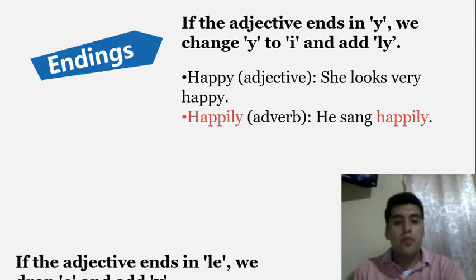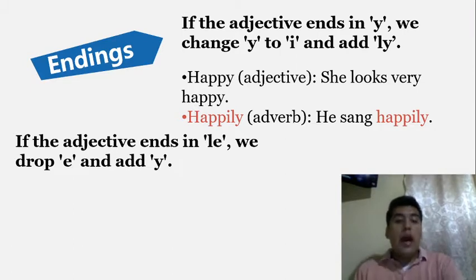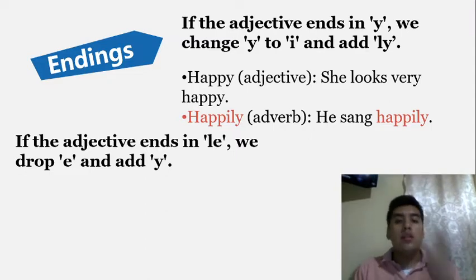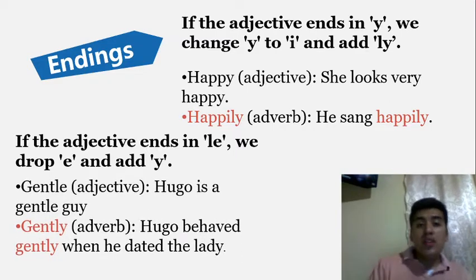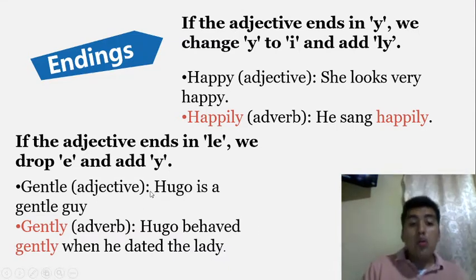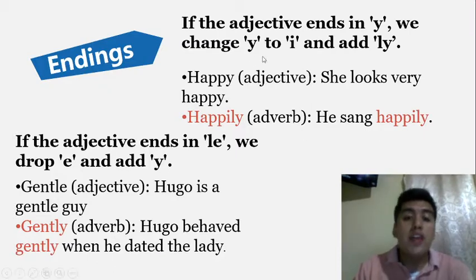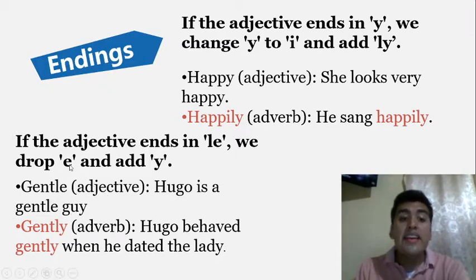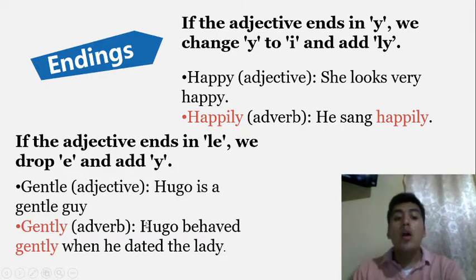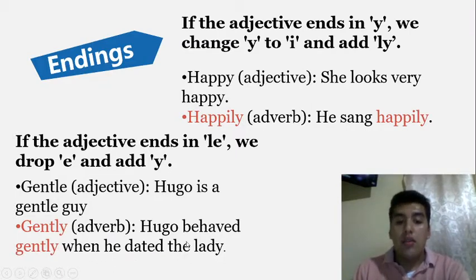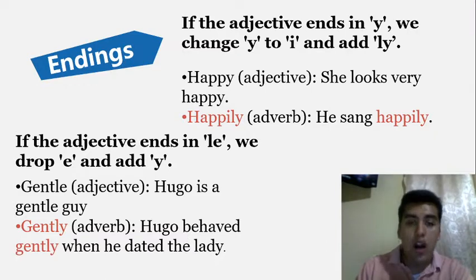Another rule: if the adjective ends in -le, we drop the e and add -y. Look at 'gentle' — 'gentle' is the adjective. 'Who is a gentle guy?' But 'gently' is the adverb — we drop the e and add -ly to say 'gently.' For example: 'He will behave gently when he dated the lady.' We are describing how he behaved.